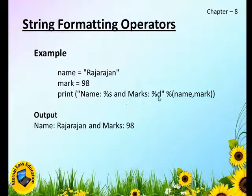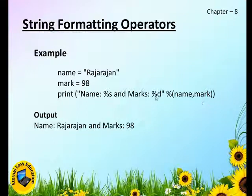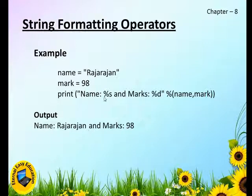Then double close quotes, after the % comes name comma mark. That means the first % is replaced by the variable name, the next one by the variable mark. If there are more variables, everything should be within the bracket in the correct order. So 'Raja Rajan' is the name and marks is 98.